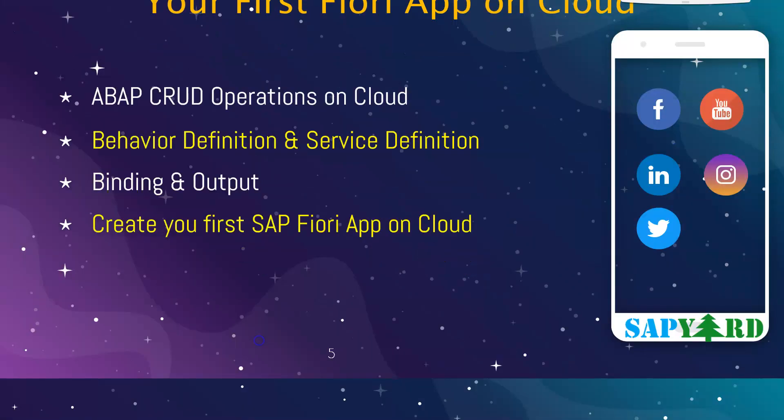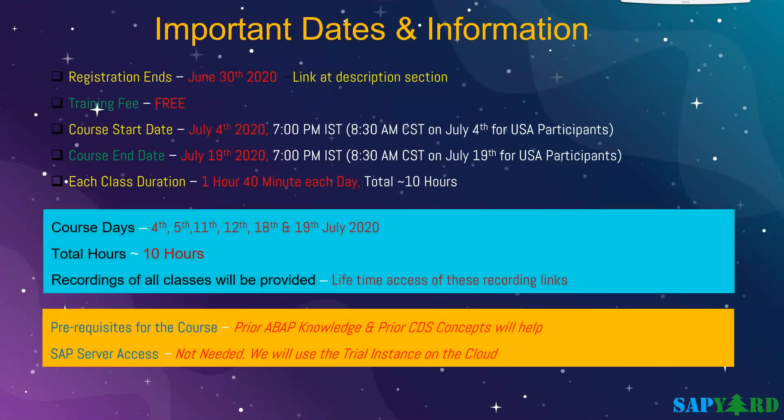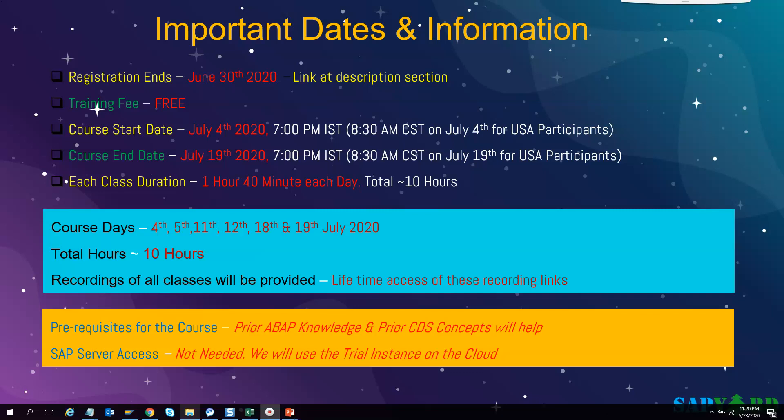Let us now look at some important dates and times. We will end the registration process on the 30th of June 2020. The registration link is in the description section below. You do not need to pay for this course as it is a free online instructor-led course. The course starts on July 4th at 7 PM IST, which will be 8:30 AM CST on the same day. We will share the training details only with registered participants. Each class will be around 1 hour 40 minutes, with a total of 10 hours across 6 classes, all held on weekends — Saturdays and Sundays only. If you miss any class, do not worry — we will share the recordings with you, which you can go through and come prepared for the next class. You will have access to these recordings for lifetime.